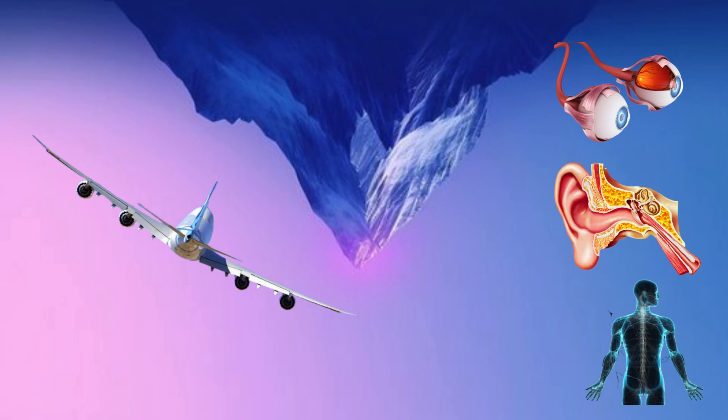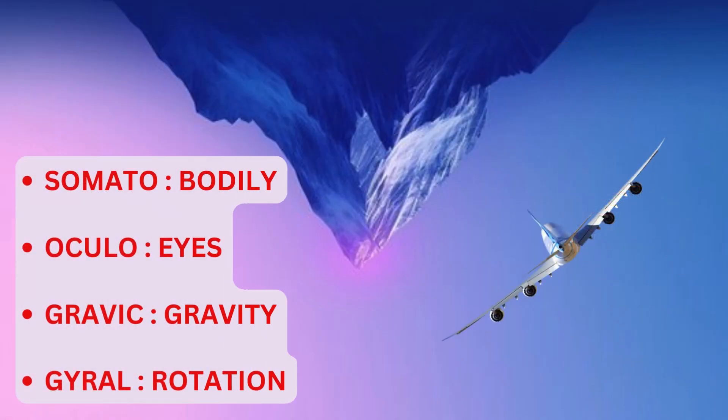When we get spatially disoriented, any one of the triad, or all of them combined, is feeding incorrect information to our brain that does not match reality. Let us see the illusions one by one. Before discussing the fancy names of these illusions, let's go through the meaning of some terms. Somato means body or bodily. Oculo means eyes. Gravic is related to gravity. And gyral is related to rotation.